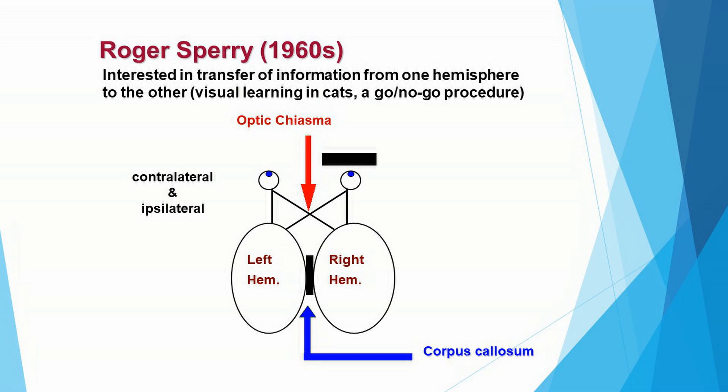Now the situation is different. The patch is on the right eye and the animal is learning the go-no-go procedure using the left eye. That information travels back to the left hemisphere but is no longer communicated to the right hemisphere. When you take the patch off and put it on the left eye, the animal cannot perform the task at 100% correct. In fact, you could teach the left hemisphere to respond when the light's on, and train the right hemisphere to do exactly the opposite — go when the light's off but not respond when the light is on.